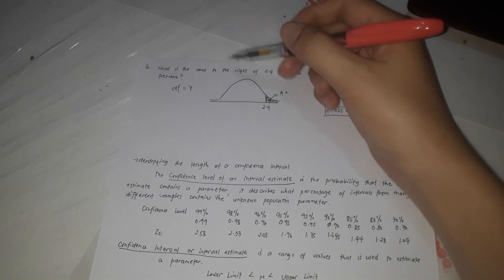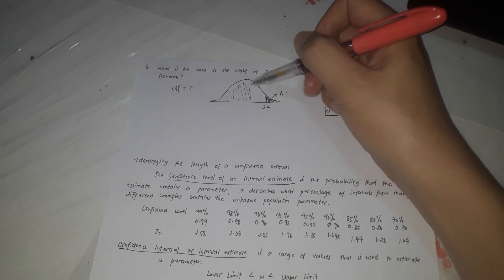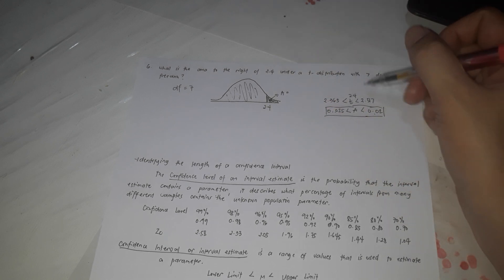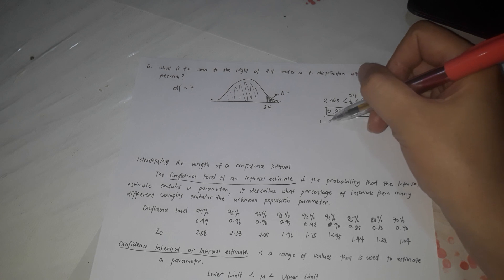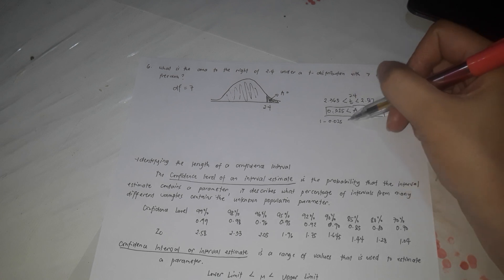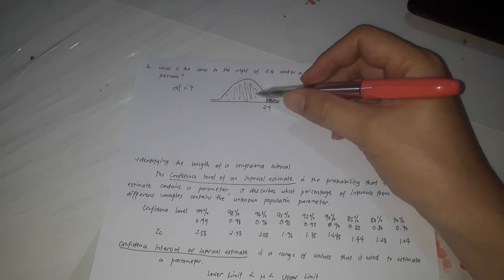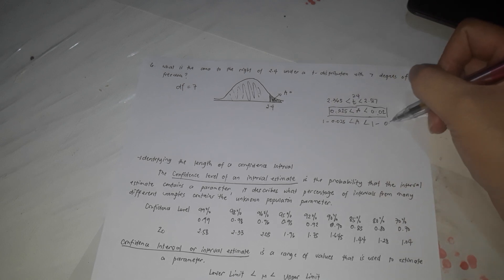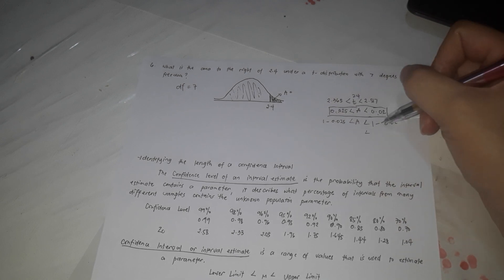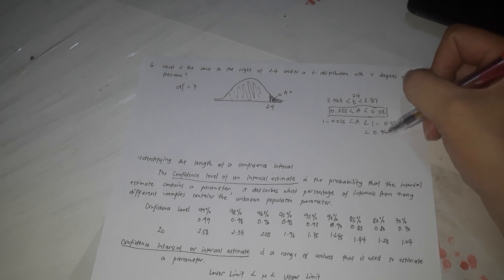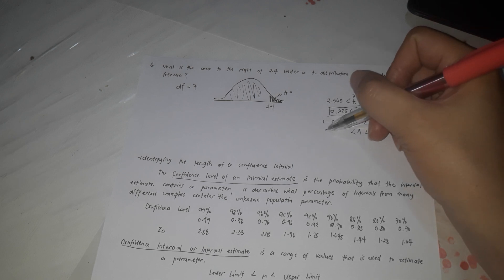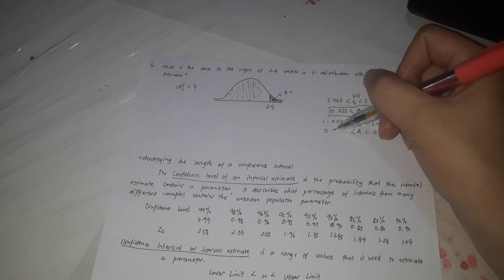If we are looking for the area to the left instead, we subtract from 1. So 1 − 0.025 gives the area to the left corresponding to the lower bound, and 1 − 0.02 gives the area to the left for the upper bound. That is the answer if the question asks for the area to the left rather than the right.